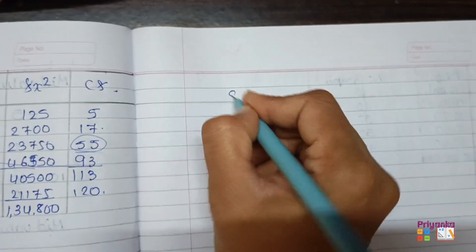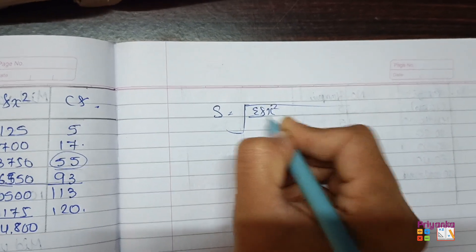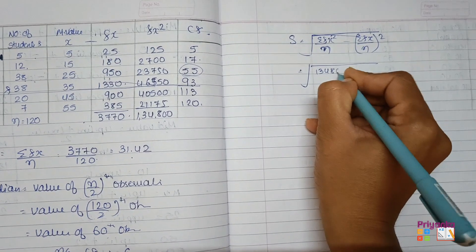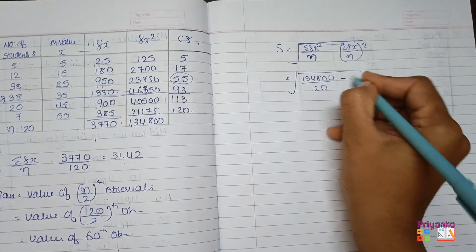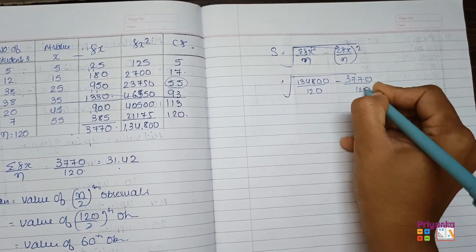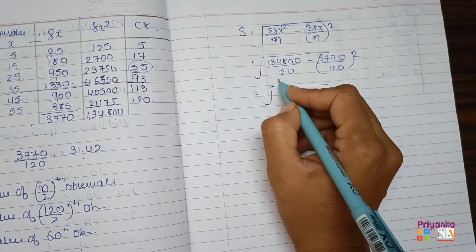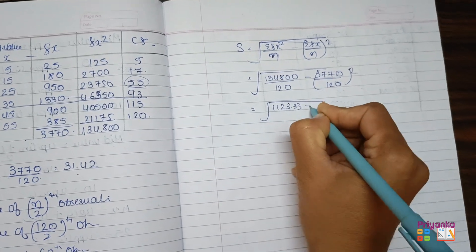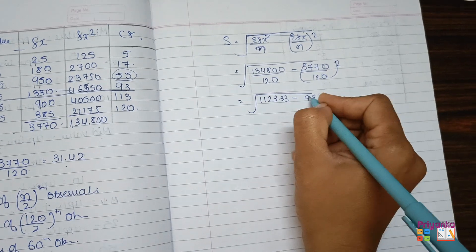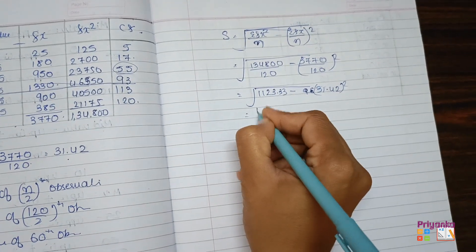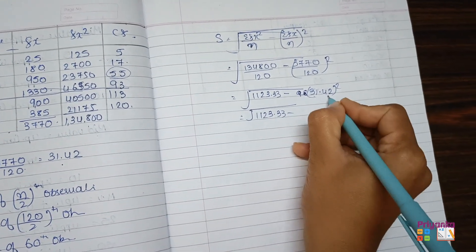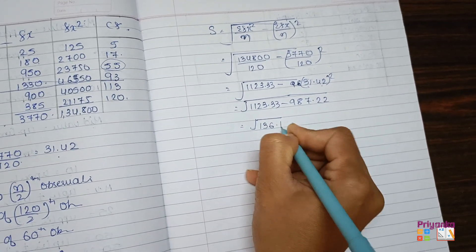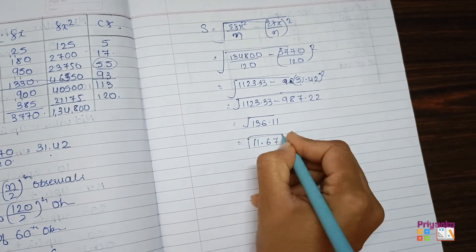Next, standard deviation. Sigma fx square upon n minus. Now let's keep the value. Sigma fx square that is 134800, n is 120 minus 3770 divide by 120 whole square. Now get them divide. Here you will get the answer 1123.33 minus the division of this, it would be 31.42 whole square. 31.42 multiplied by 31.42, you will get 987.22. Get them subtract, 136.11 and the square root of it, you will get 11.67.